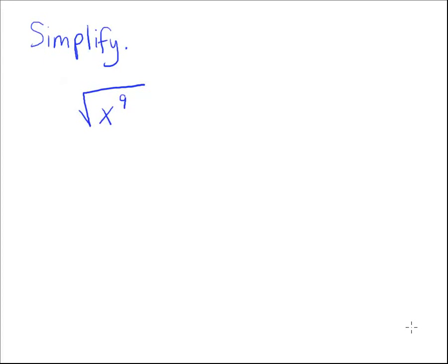In this problem here, we have a square root that we want to simplify. And it is a square root because even though you don't see it, there is an index sitting right here. And it's really the number 2. So if you don't see a number right there, it's an understood index of 2.